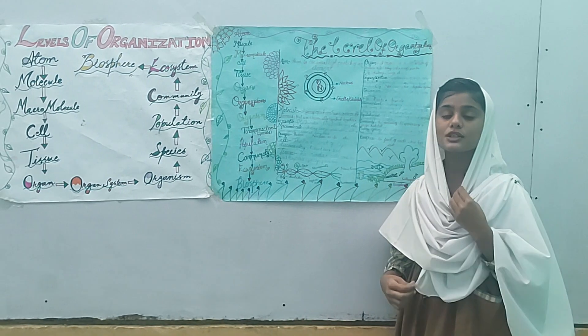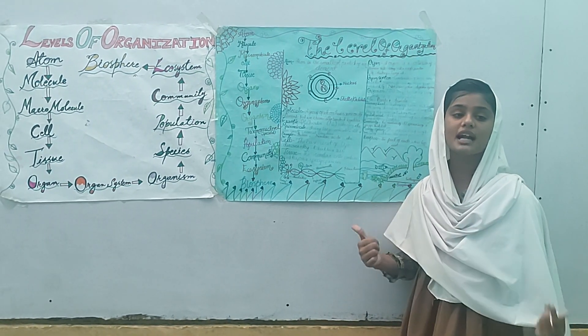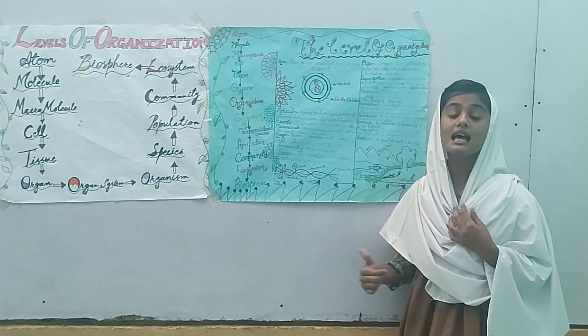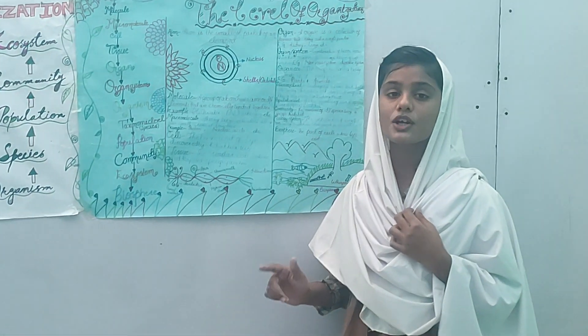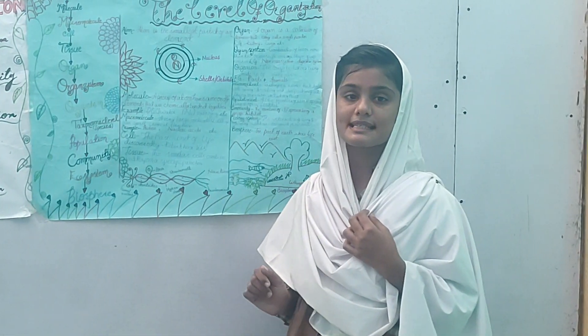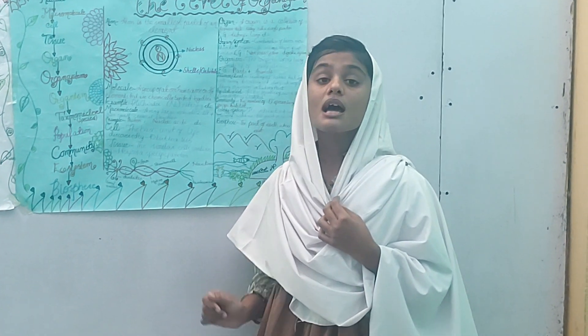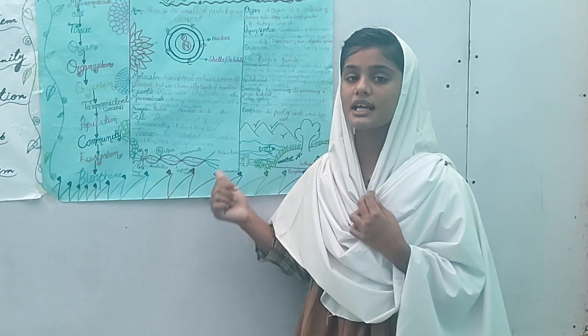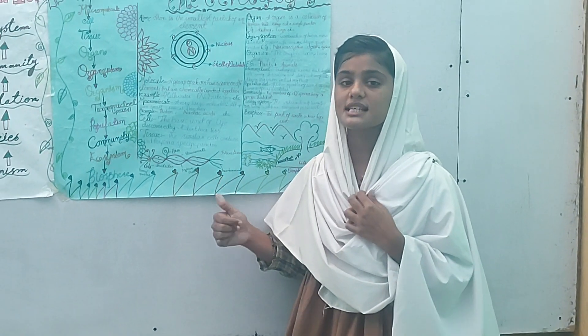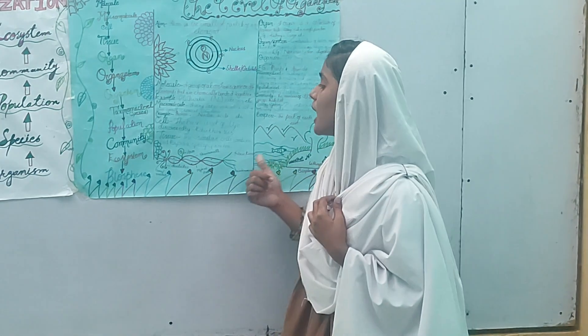What is a cell? The basic unit of life is called a cell. The cell was discovered by Robert Hooke in 1665. The study of cells is called cytology, also known as cell biology.